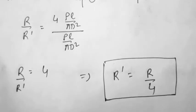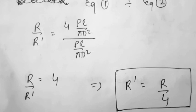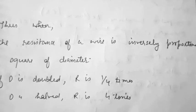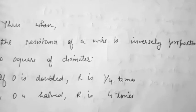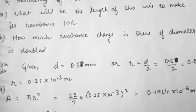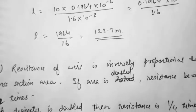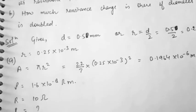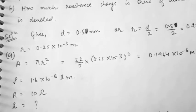So if the diameter is doubled, the resistance becomes 1/4 times. We can conclude: resistance of a wire is inversely proportional to the square of the diameter. If diameter is doubled, R becomes 1/4 times; if diameter is halved, R becomes 4 times. So if the diameter is being doubled, the resistance becomes 1/4 times. Remember: write what is given, find what is asked, apply the formula, and you will get the answer.